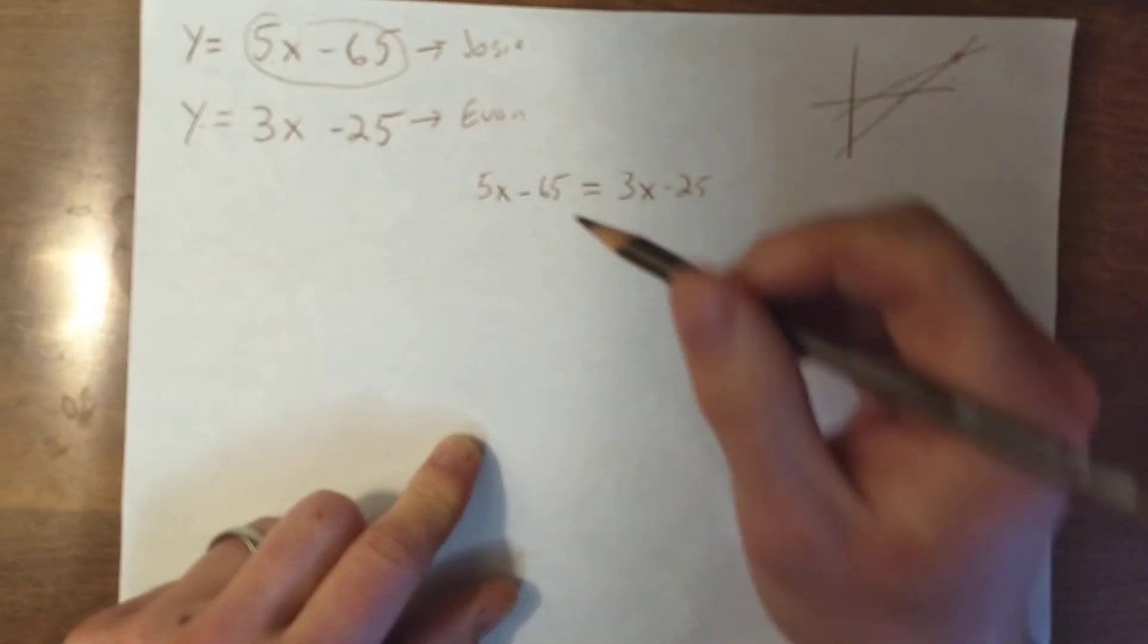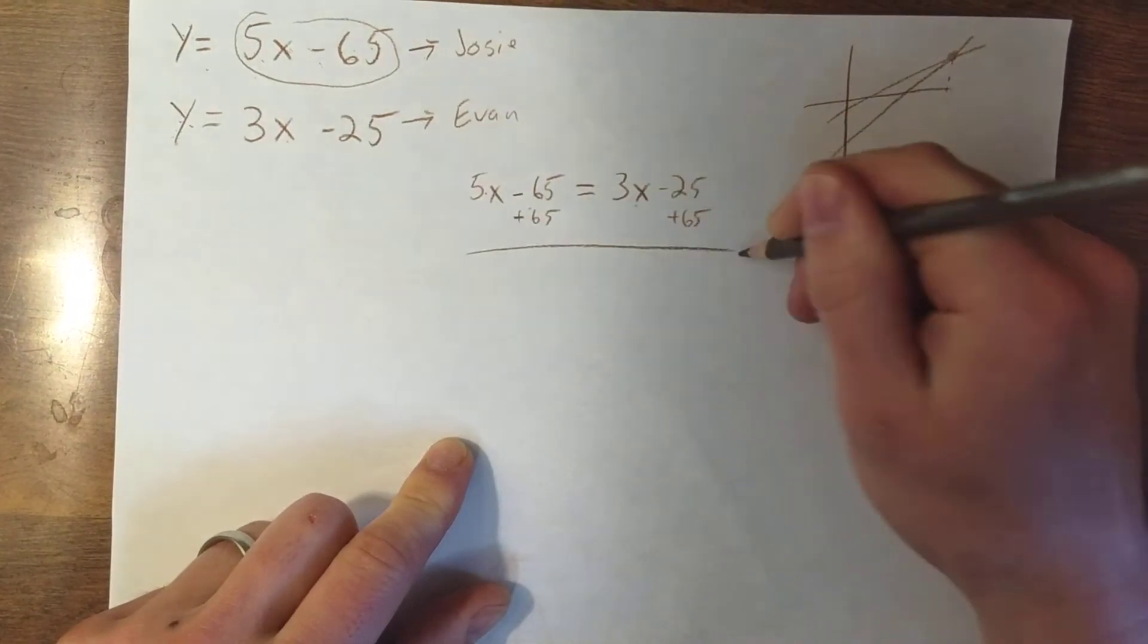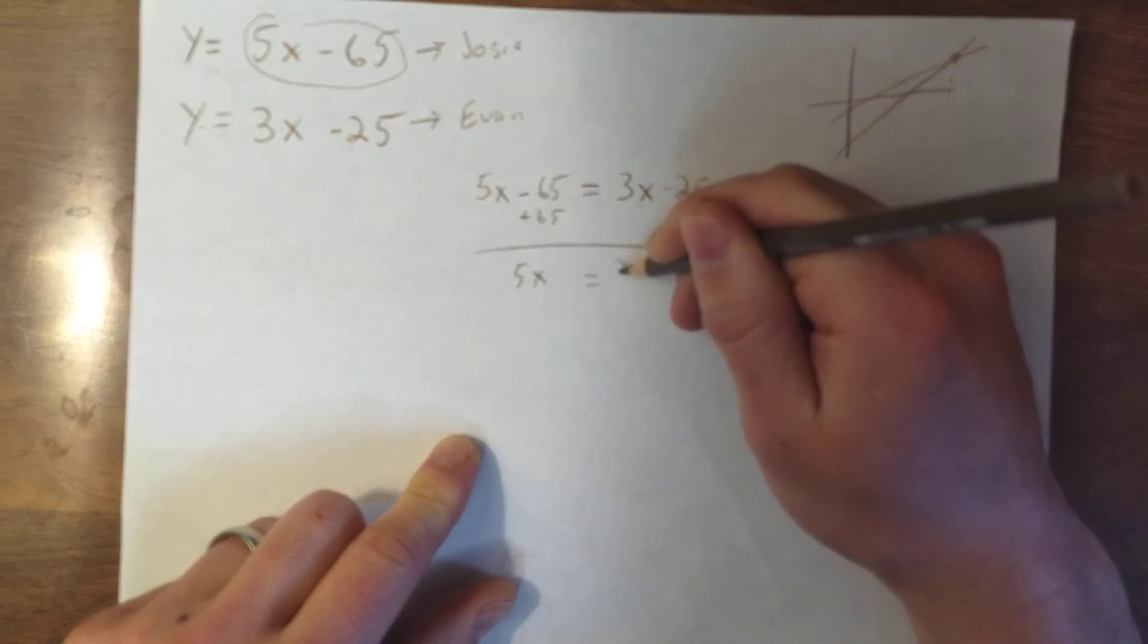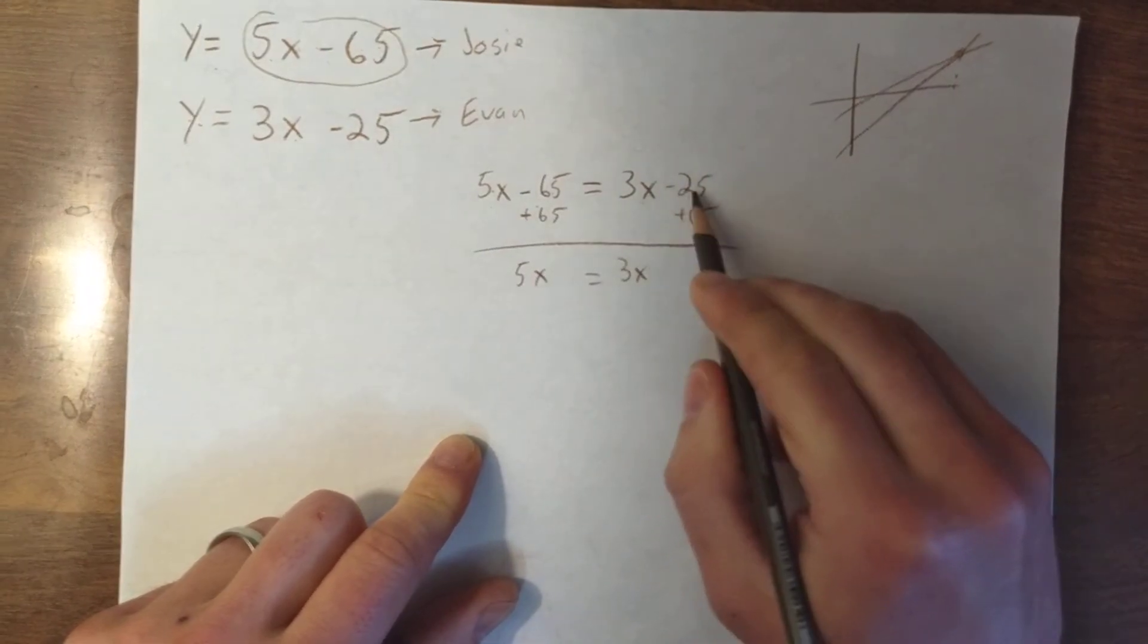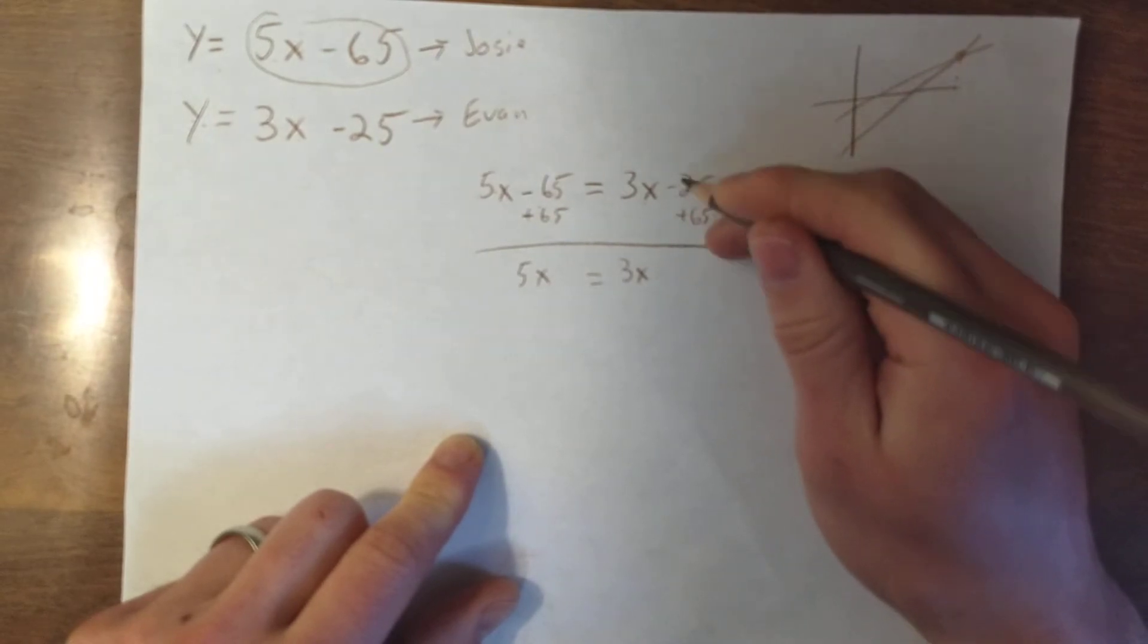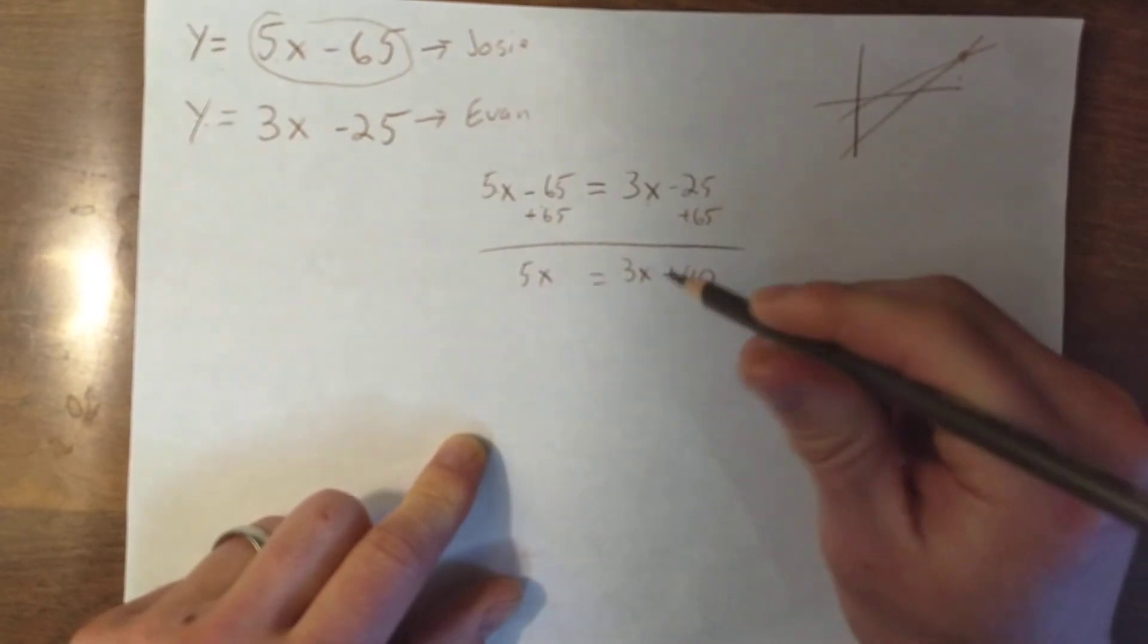So first, I'm going to add 65 to both sides. When I add 65 to this side, I'm just left with 5x over here. I now have 3x, negative 25 plus 65, that is going to be 3x plus 40. Did I do that math right? I did.